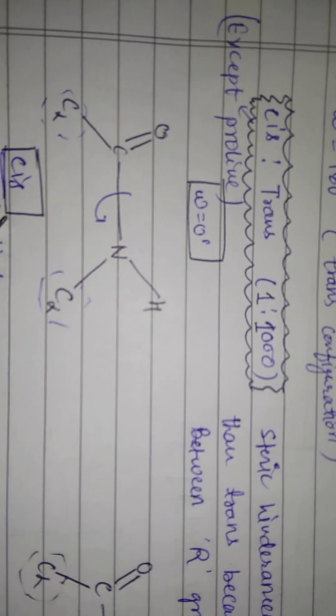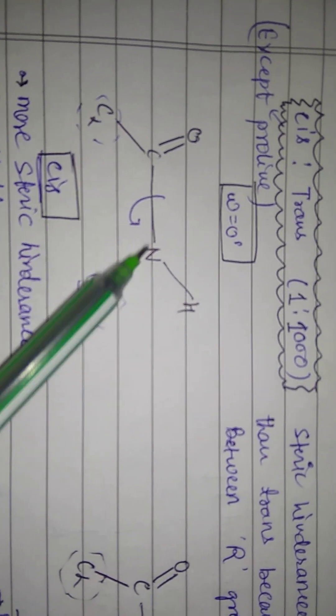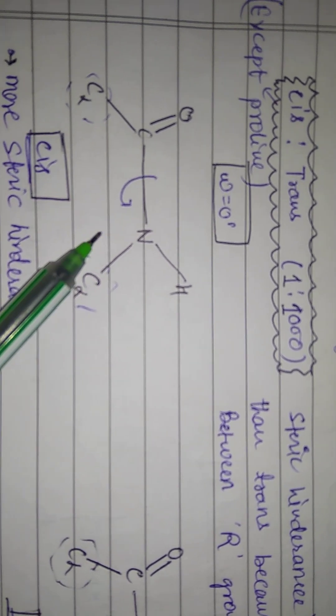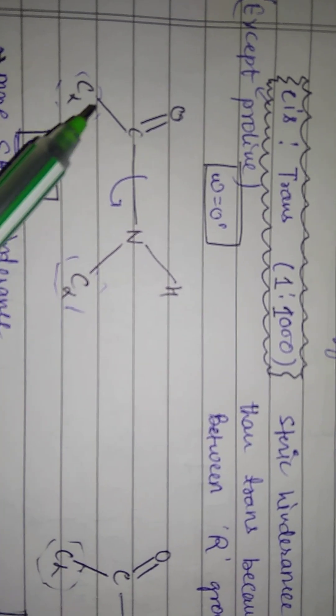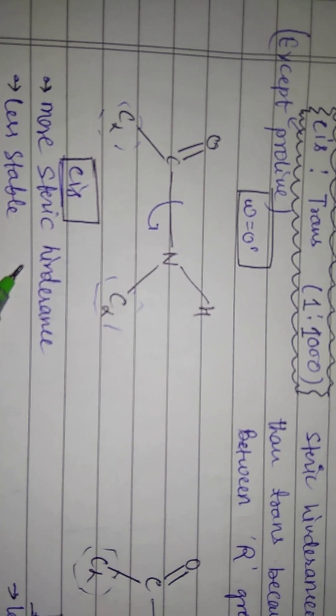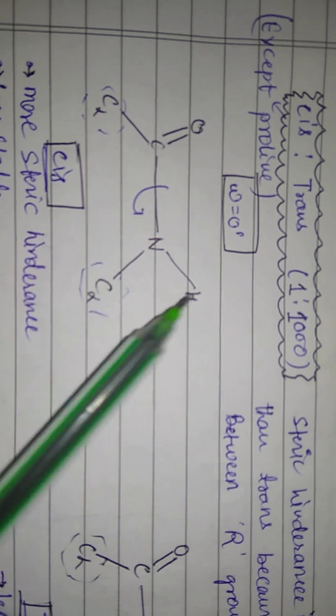In cis configuration, we say that what is the same side? We are numbering on atomic number. We are in one region. So, the steric hindrance is less stable. This is why we flip it.